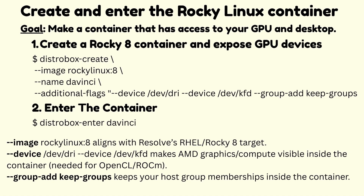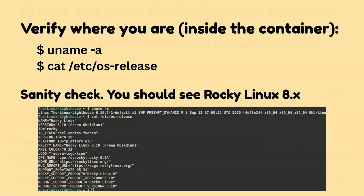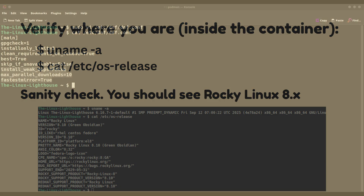In my case the container name is 'davinci'. The flag --image rockylinux:8 aligns with Resolve's Red Hat Enterprise Linux Rocky 8 target. --device /dev/dri and --device /dev/kfd make AMD graphics and compute visible inside the container, needed for OpenCL and ROCm. --group-add keep-groups keeps your host group memberships inside the container. Verify where you are by running 'uname -a' and 'cat /etc/os-release'. You should see Rocky Linux version 8.